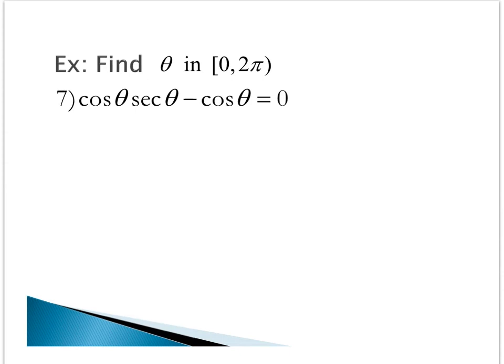Time for our last problem. In this case, you know that you cannot divide off a cosine. We need to instead factor it out. We factor out our cosine of theta, giving us cosine of theta times secant of theta minus 1 equals 0.